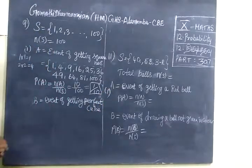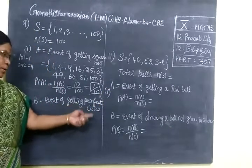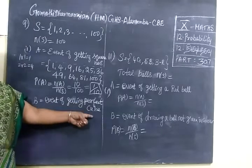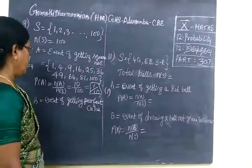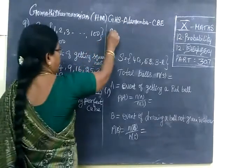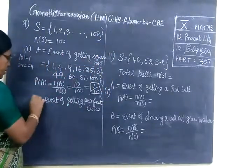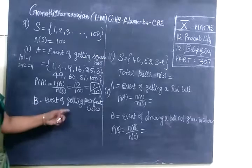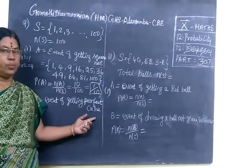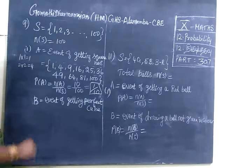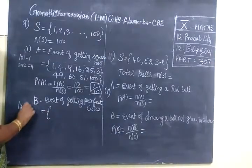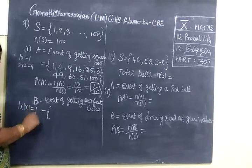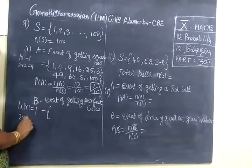Next we are selecting event of getting perfect number. Not a perfect number, sorry. Not a perfect cube number. You will have to find it. First we select event of getting perfect cube.